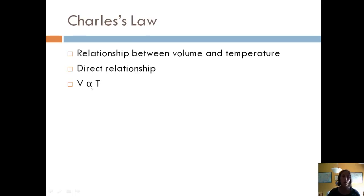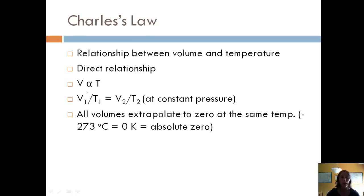So that gives us a relationship of V1 over T1 equals V2 divided by T2. And just like temperature had to be constant in Boyle's law, pressure has to be constant for Charles' law. All volumes will eventually extrapolate to zero at the same temperature because negative 273 Celsius is 0K, which is considered our absolute zero.